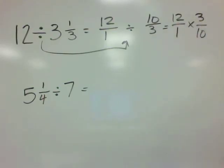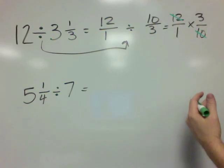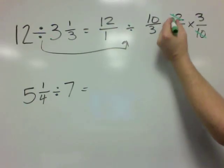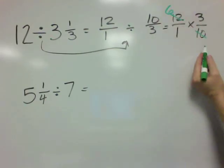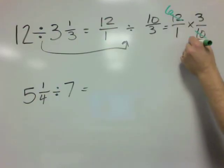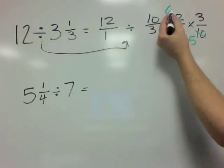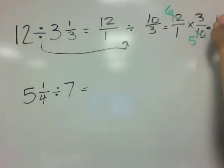And then we multiply, but I like to cross cancel first. And I see that the 12 and the 10 are both divisible by 2. So 12 divided by 2 is 6, and 10 divided by 2 is 5. And that way we can multiply, and we get 6 times 3 is 18.